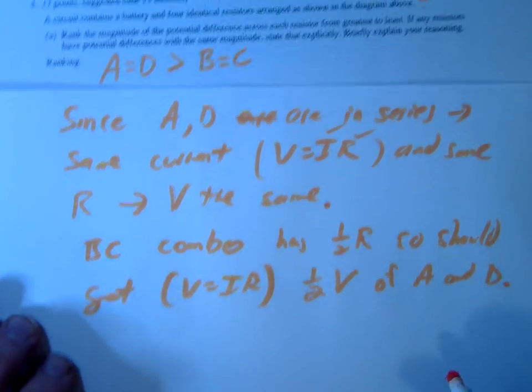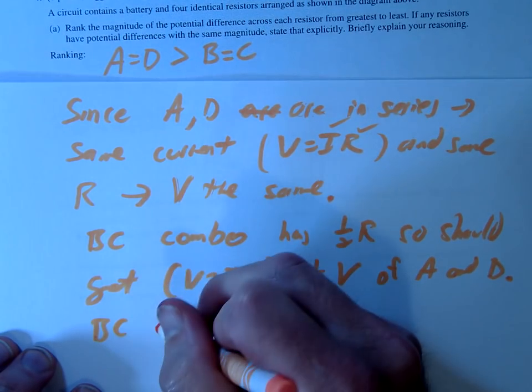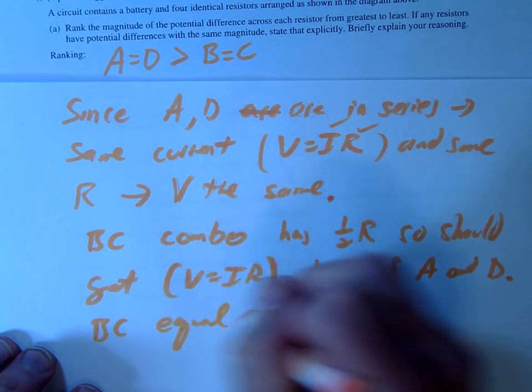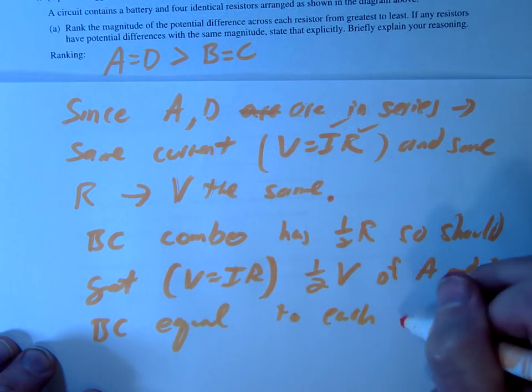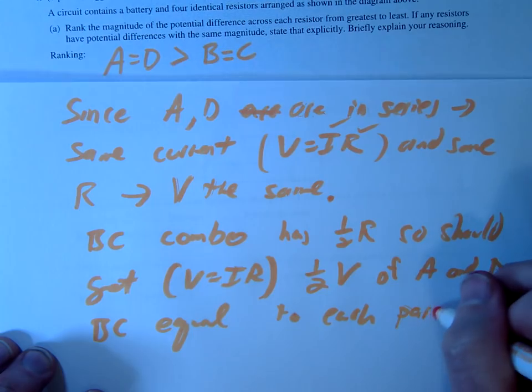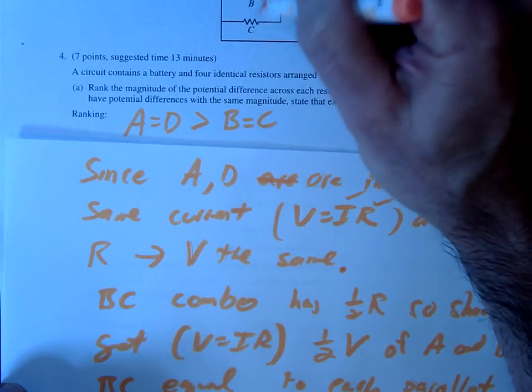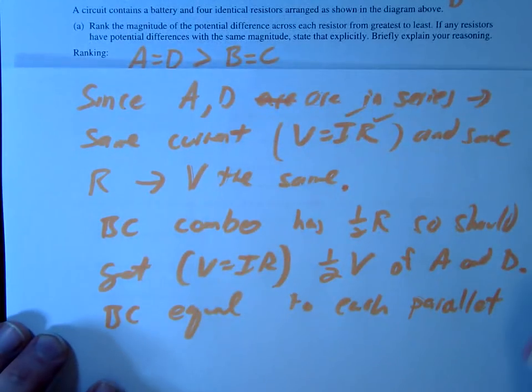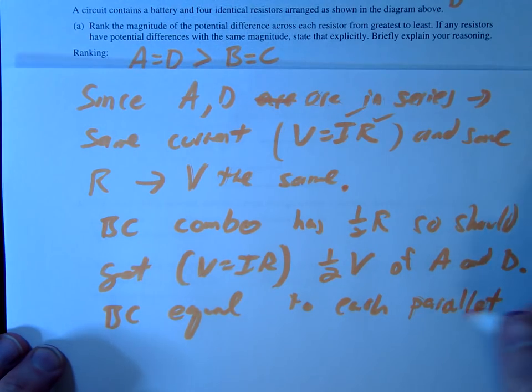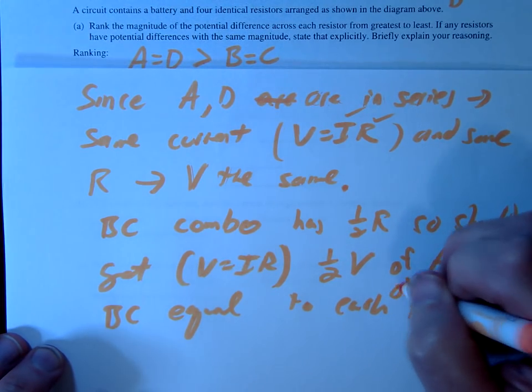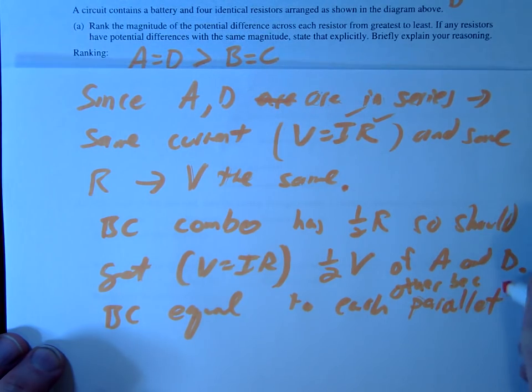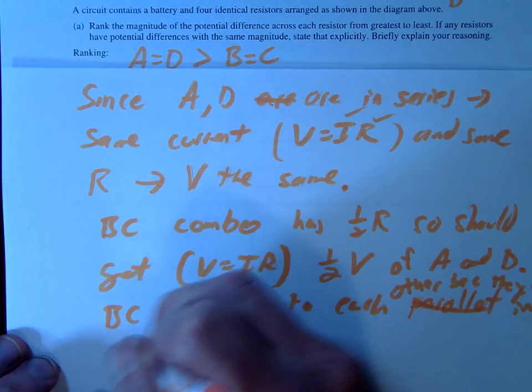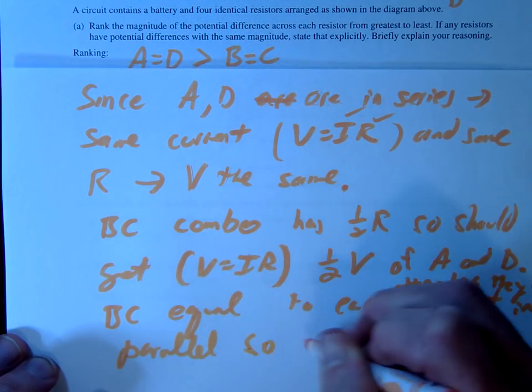Okay, and then lastly, B and C are equal, equal to each other, because in parallel circuits, because it's a parallel circuit. And in parallel circuits, the voltage across them, like when you do your loop law, the voltage across them must be equal to each other. Equal to each other because they are in parallel. So equal voltage.